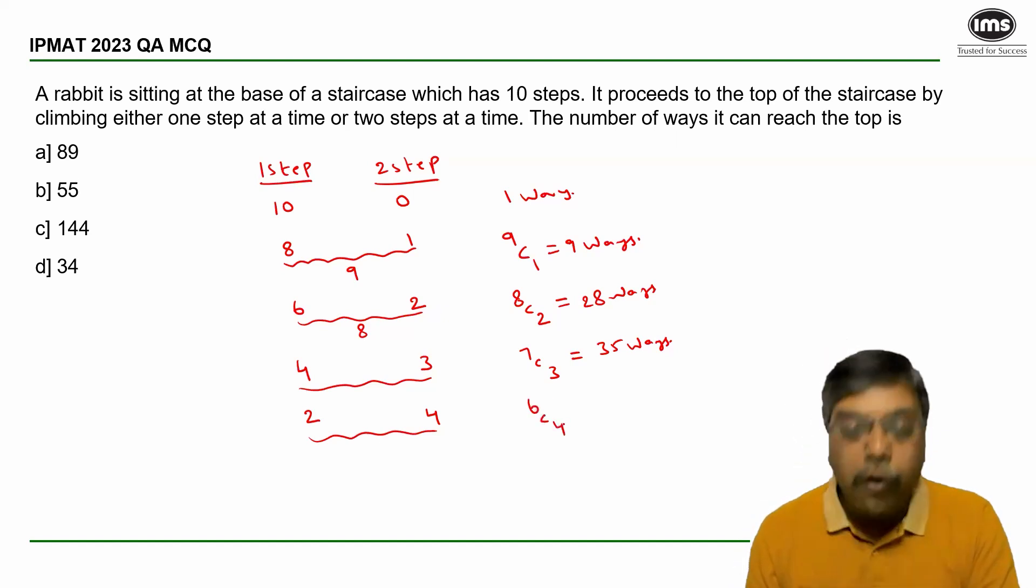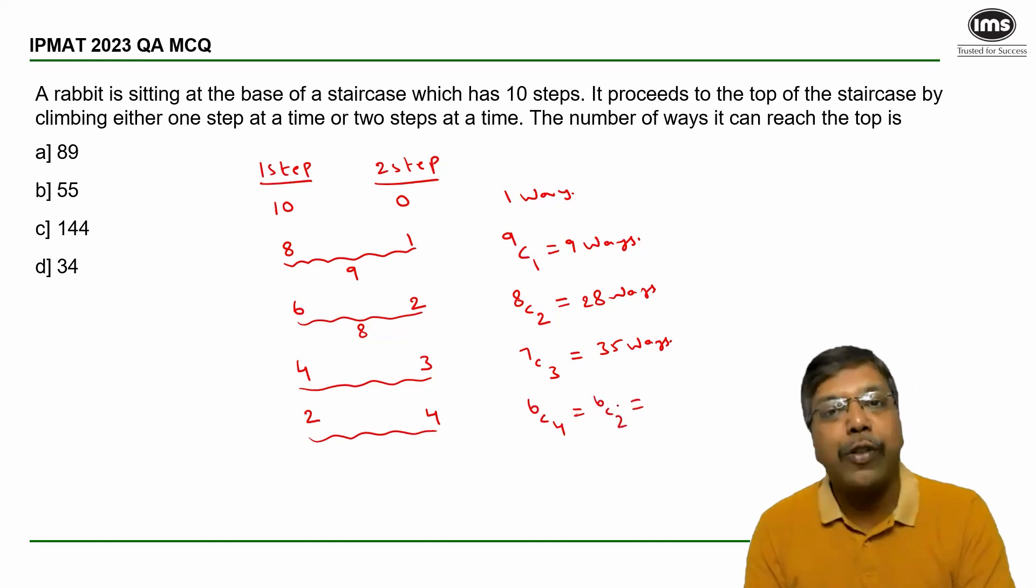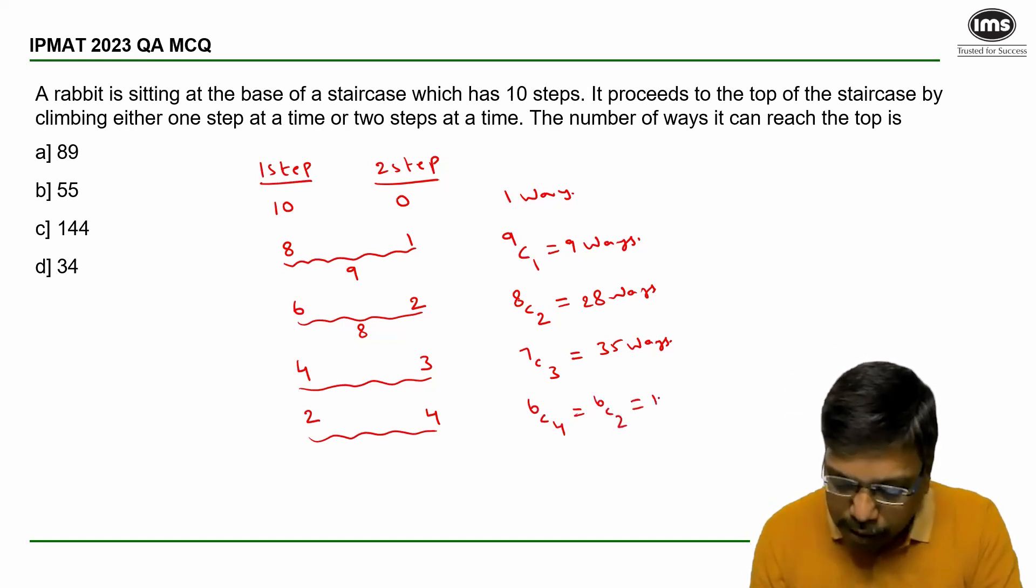four jumps must be double steps. Number of ways is 6C4, which is the same as 6C2 because nCr equals nC(n-r). So that is equal to 15 ways.